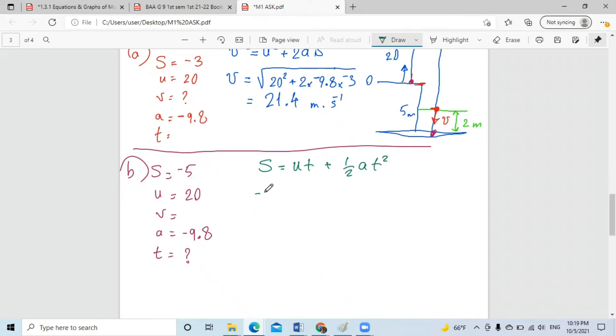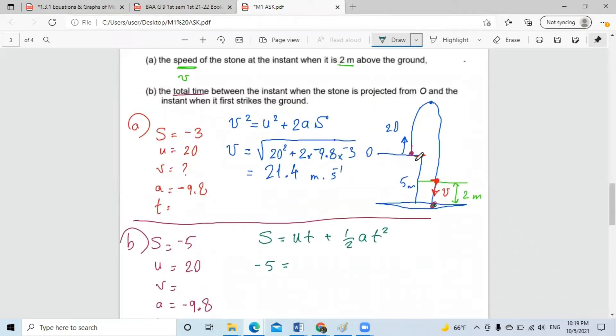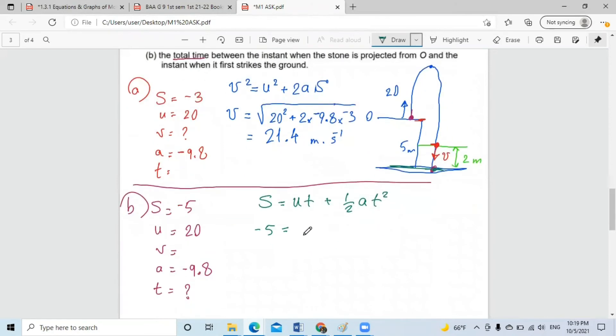And the S is negative five, because it starts from the beginning here and reaches the ground here. So it falls the distance which is negative five meters. U, which is 20T plus half multiplied by negative 9.8 multiplied by T squared.